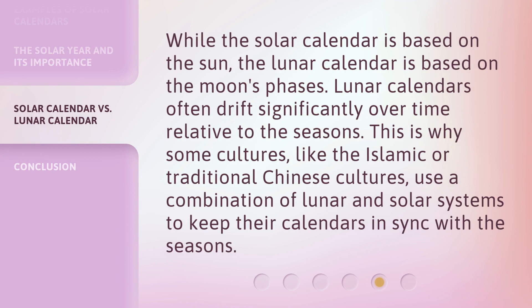While the solar calendar is based on the sun, the lunar calendar is based on the moon's phases. Lunar calendars often drift significantly over time relative to the seasons. This is why some cultures, like the Islamic or traditional Chinese cultures, use a combination of lunar and solar systems to keep their calendars in sync with the seasons.